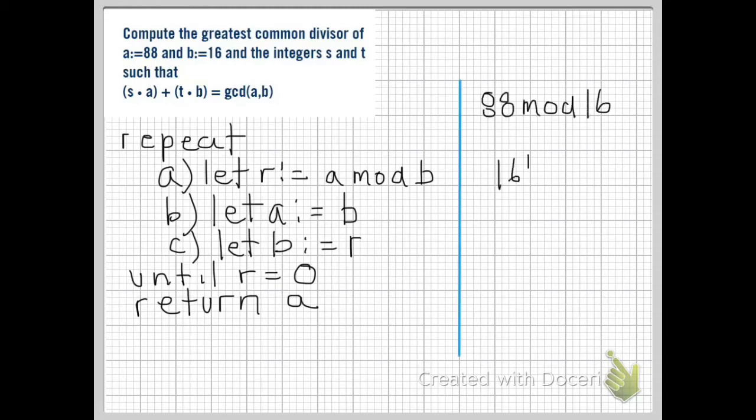So we start: 88 mod 16. 16 goes into 88 five times. 5 times 16 equals 80. We have a remainder of 8. So we have r equals 8, a equals 16, and b equals 8. Now r is not equal to 0, so we repeat the loop one more time.